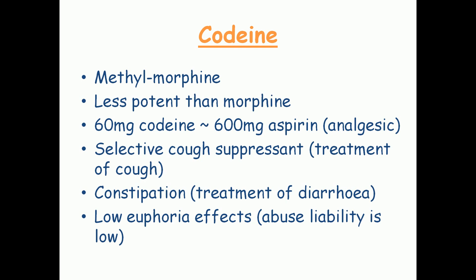Codeine is basically methylmorphine — it is related to morphine and is simply a methylated form of it. However, it is less potent than morphine; its analgesic effect is much less. For comparison, 60 mg of codeine produces the same analgesic effect as 600 mg of aspirin. In the body, enzymes known as CYP2D6 act on codeine, causing demethylation, converting codeine to morphine, which then produces its typical effects.